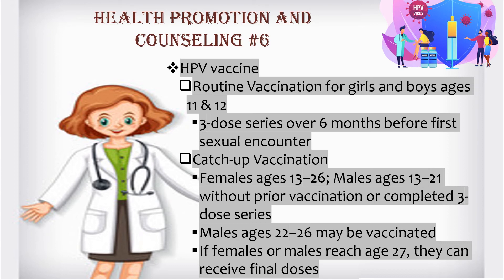Part of health promotion and counseling is the HPV vaccine. Routine vaccination for girls and boys is during ages 11 and 12, with a three-dose series over six months before the first sexual encounter. For catch-up vaccination, this applies to females aged 13 to 26 and males aged 13 to 21 without prior vaccination or who have not completed the three-dose series.